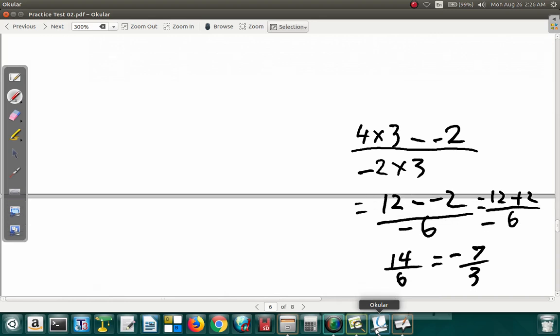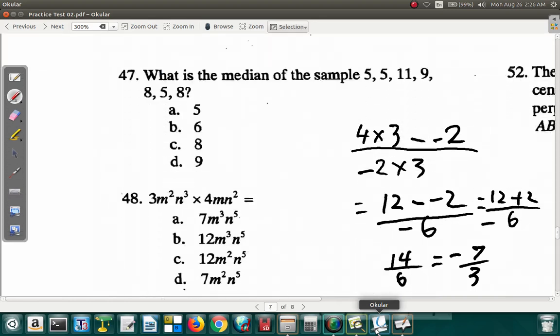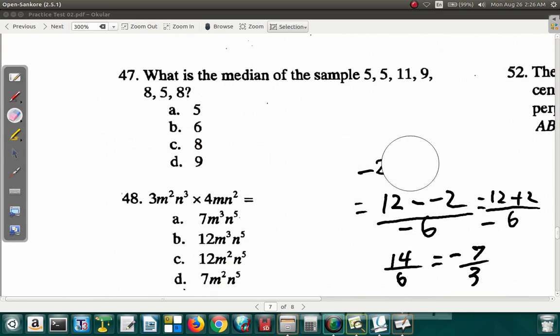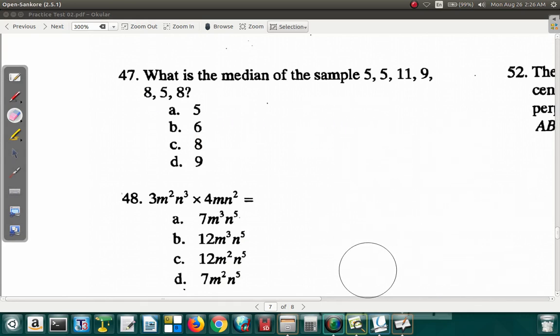We go on to question 47 now. Question 47. It says, what is the median of the sample? 55, 11, 9, 8, 5, 8. First of all, these numbers, you have to arrange them in ascending order. This could be ascending or descending, but the lowest number here is 5. There's a 5, there's another 5, there's another 5. So there are three 5s.